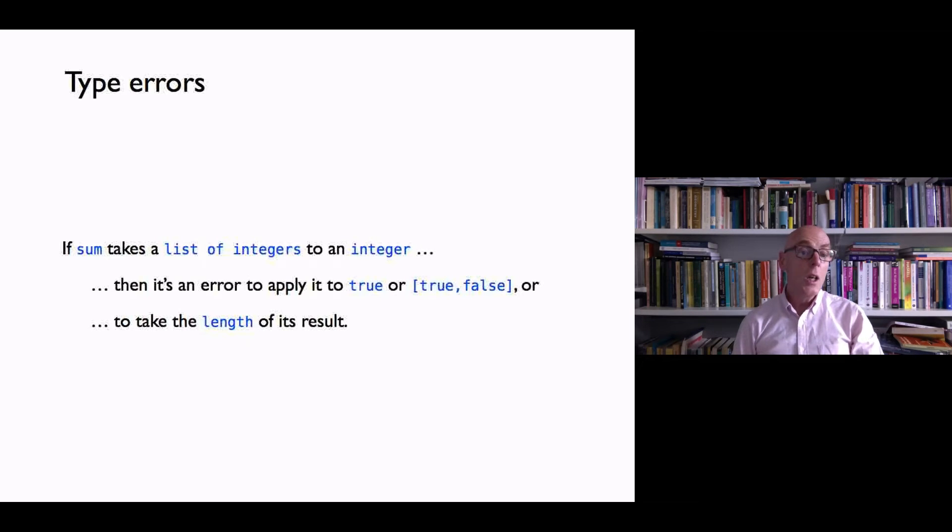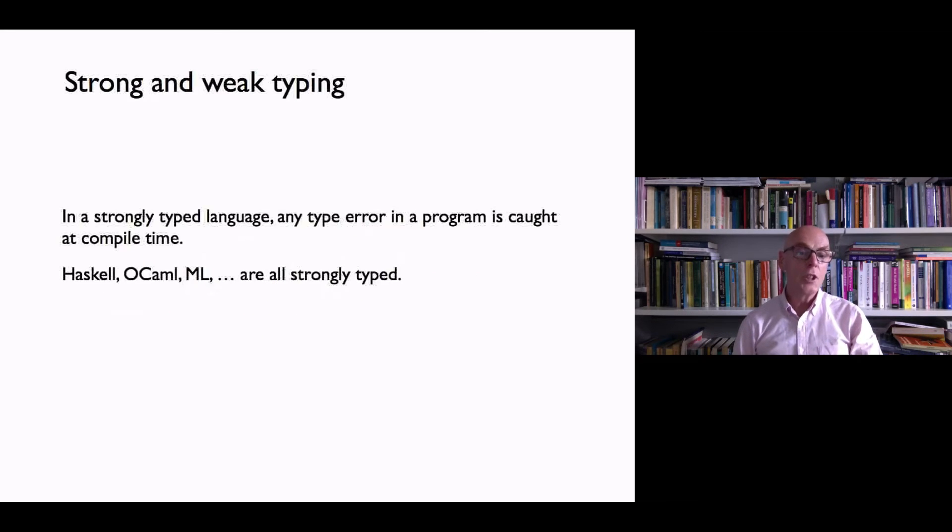So this sort of error is one that in principle is easy to discover. We don't have to know what particular list of booleans we have in order to know that we can't apply sum to it. So it's possible, and some languages support this, to make sure that any type error that a program contains is caught at compile time.